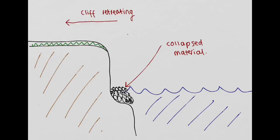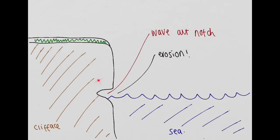So as a result of that, the wave cut notch will eventually give way. It can't support the weight of all this rock on top of it, and it eventually gives way. So the front area of the cliff collapses. The area above the wave cut notch collapses.